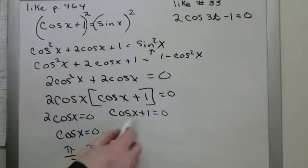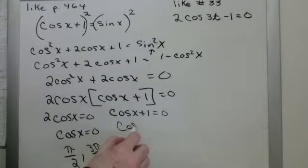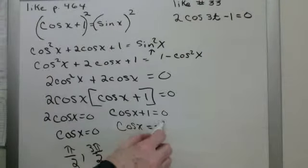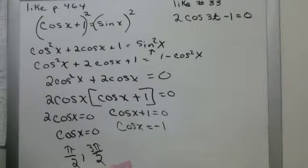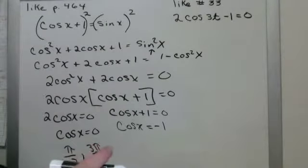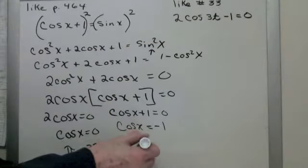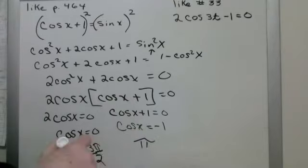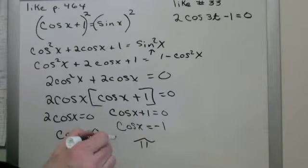For those two answers, let's do this one. Cosine x equals negative 1. So where does the cosine x equal negative 1? Cosine x equals negative 1 at pi. So there we go. Those are our three answers.